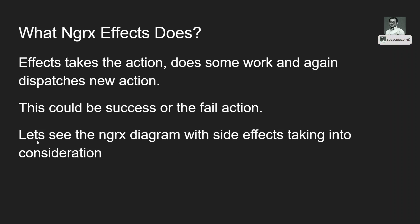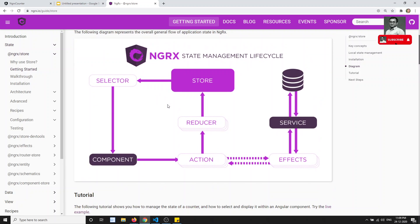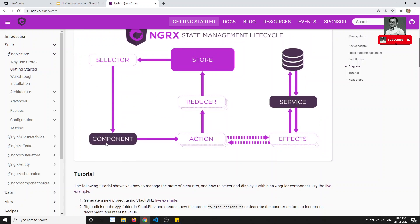Let's look at the NgRx diagram with side effects taken into consideration. Up to now we have seen only the NgRx store diagram; now we will combine the NgRx Effects library as well. In this NgRx store diagram, we have the component — for example the login form with email and password. The component dispatches a login action. This action has two possible routes: it can go to the reducer, or it can go to the effects.